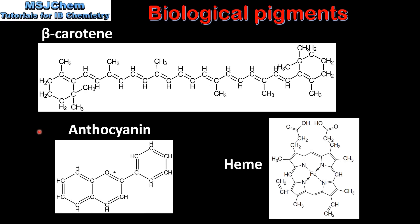And finally, here we have some more examples of biological pigments. We have an anthocyanin and heme. Just like beta carotene and chlorophyll, these molecules have highly conjugated systems which absorb wavelengths of light in the visible region. And in the next video we look at these molecules in more detail.